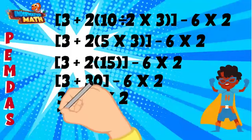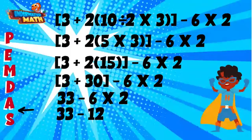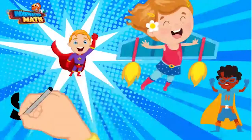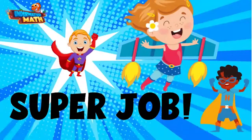We must solve 6 times 2 before subtraction because multiplication comes first — 6 times 2 equals 12. Finally, we move to addition and subtraction: 33 minus 12 equals 21, and we have simplified this super problem. Super job — have fun practicing!